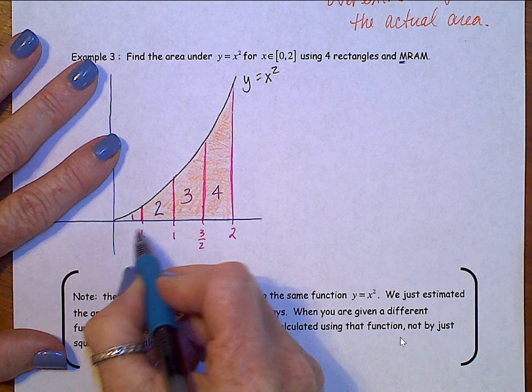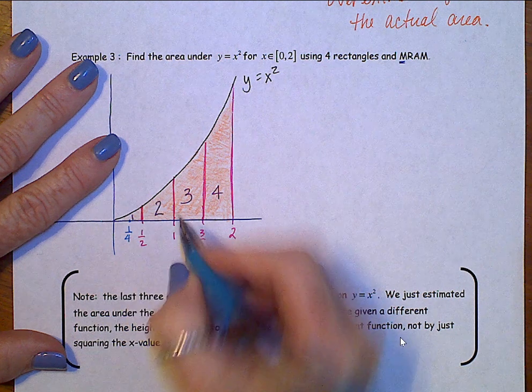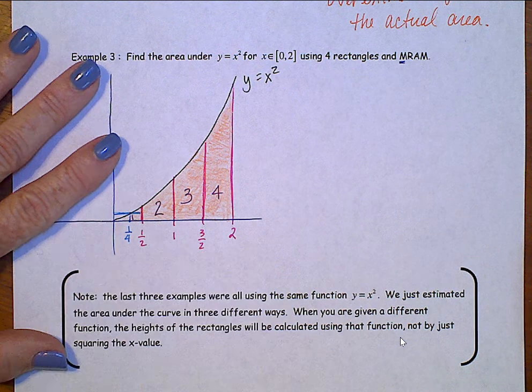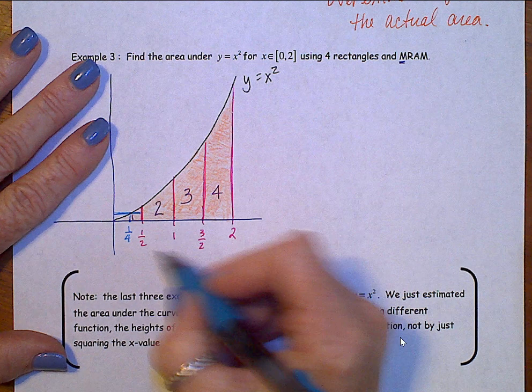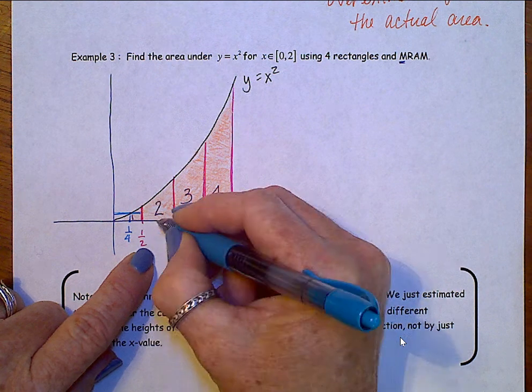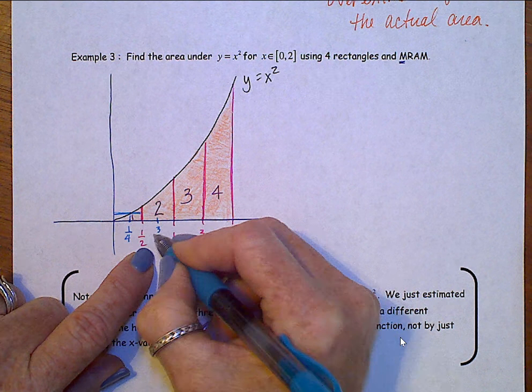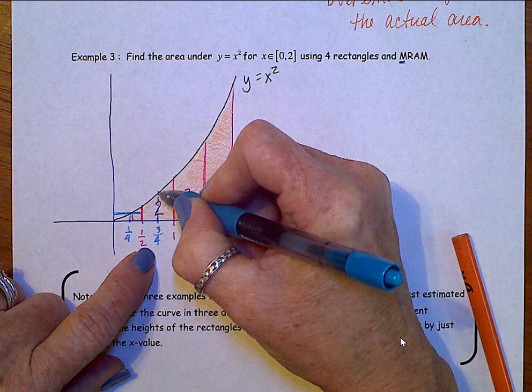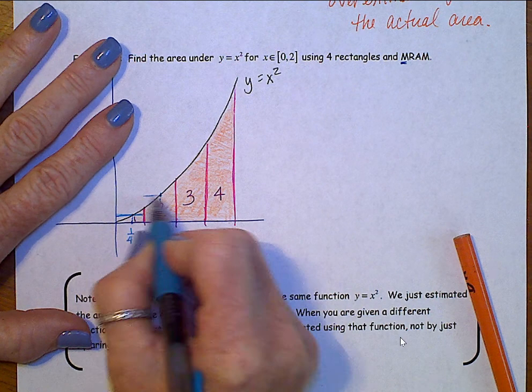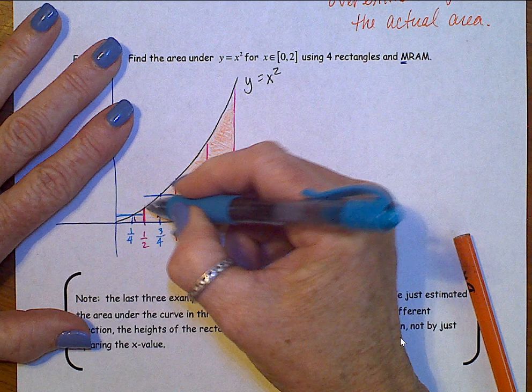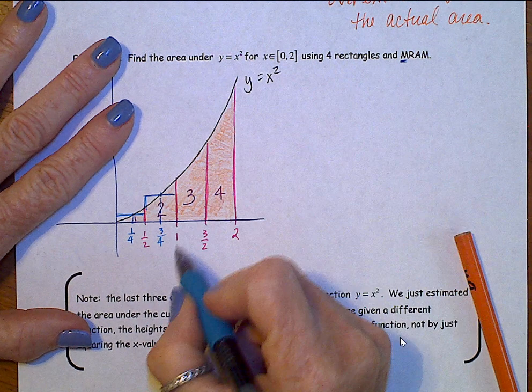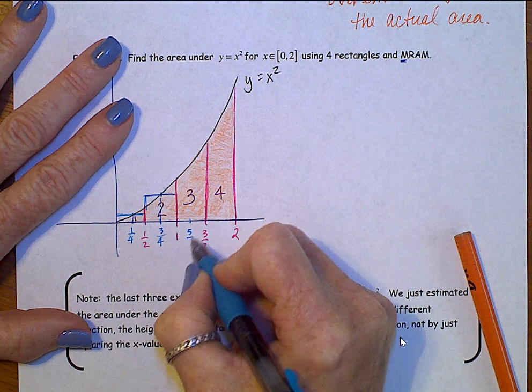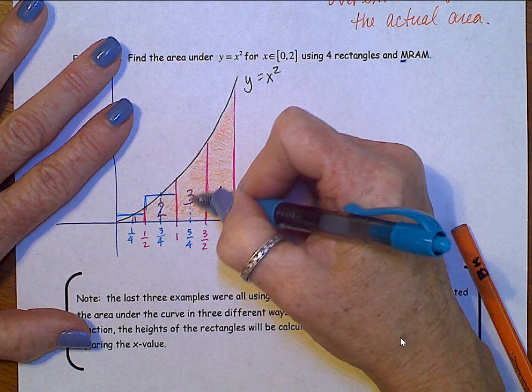So, what's halfway between zero and a half is one fourth. And where one fourth goes up and hits the function, that's the height of that first rectangle. Halfway between a half and one is at three fourths. Take that three fourths up to where it hits the function. That will be the height that's used for the second rectangle.